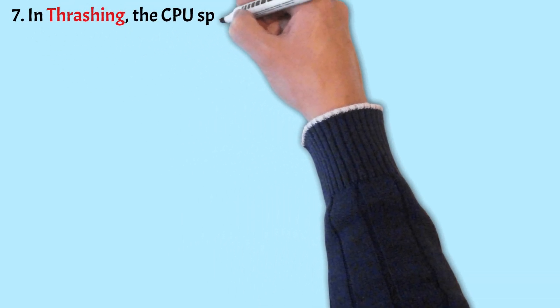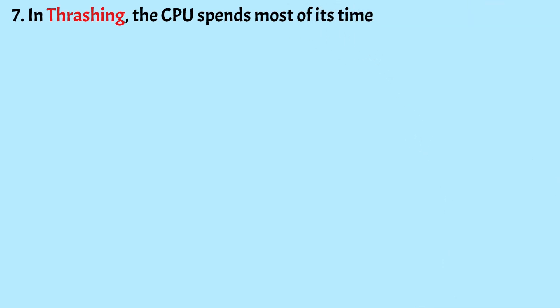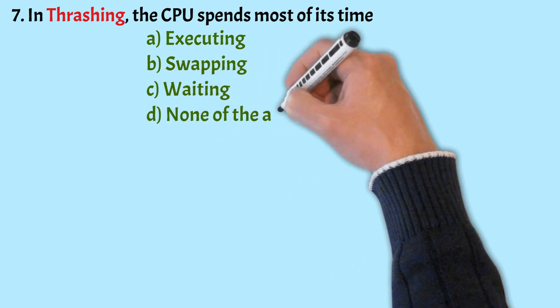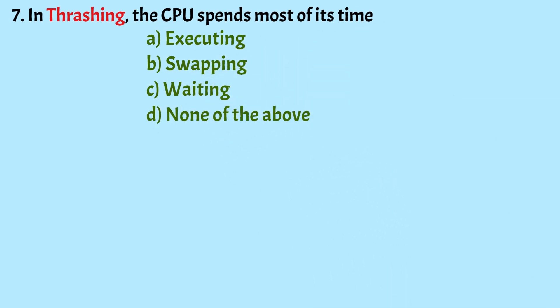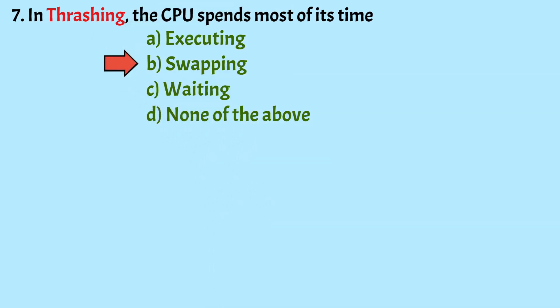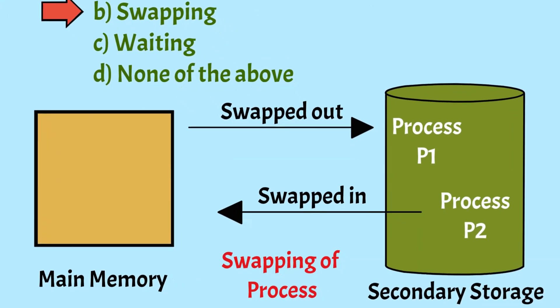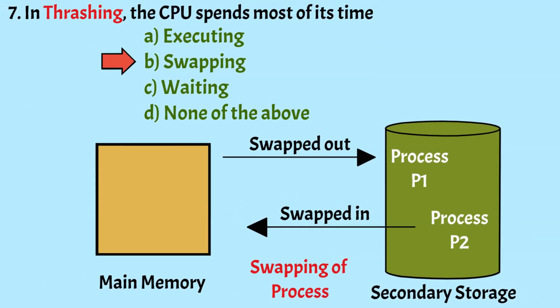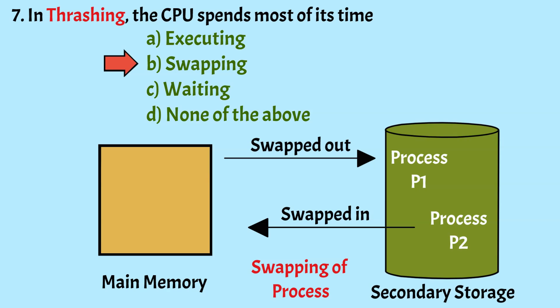In thrashing, the CPU spends most of its time: executing, swapping, waiting, or none of the above. The correct answer is Option B, swapping. Thrashing is a state where the CPU spends most of its time swapping pages between main memory and virtual memory, rather than executing instructions. Thrashing results in performance problems in the OS, since the CPU spends less time on productive work and more time swapping.